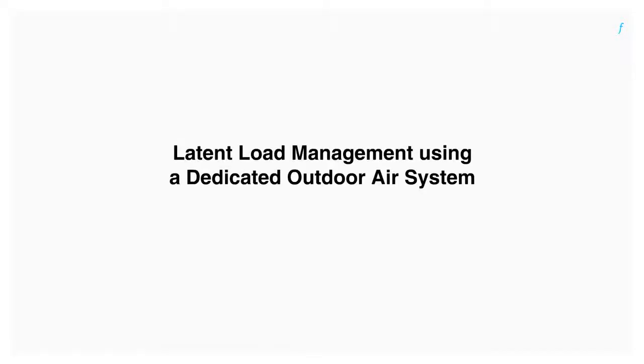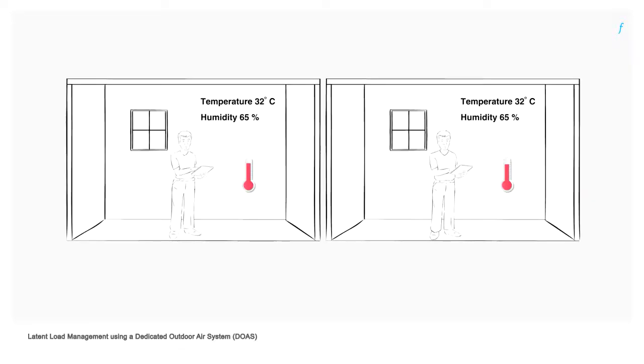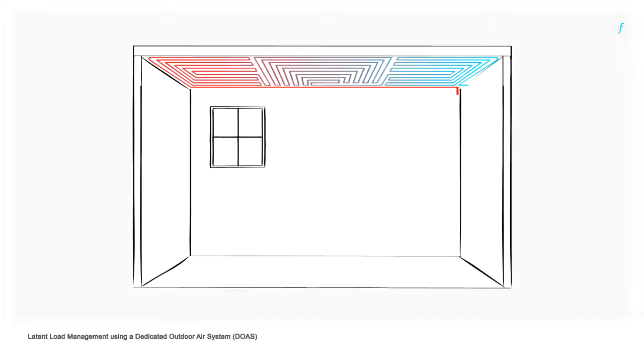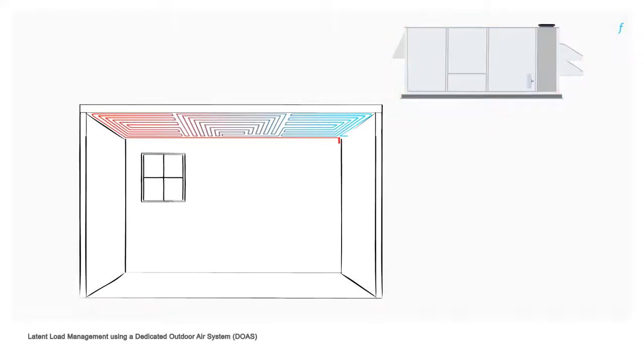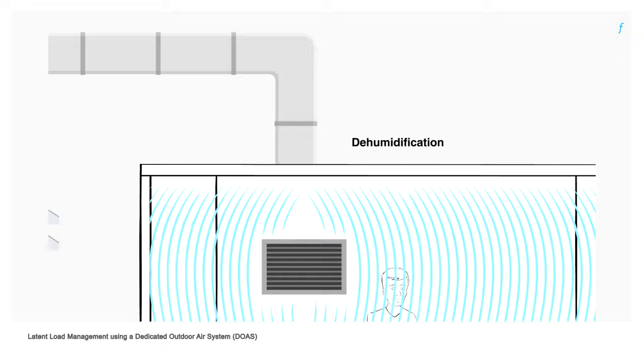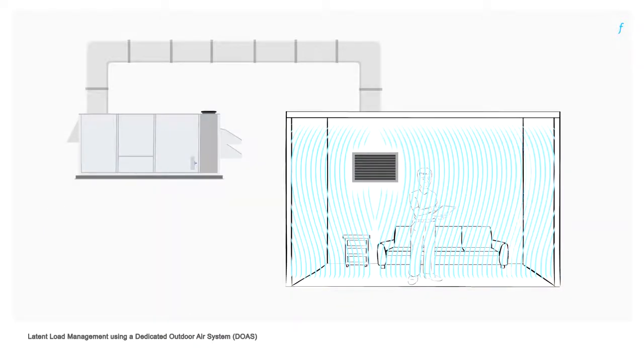Latent heat load management using a dedicated outdoor air system. Comfort is as much about humidity as it is about heat. While radiant panels take care of the heat in the air, a dedicated outdoor air system is essential to handle humidity in the space. Along with dehumidification, the dedicated outdoor air system accomplishes ventilation and filtration. The air quantity requirement in this system is much lesser when compared to a typical air-based cooling system.